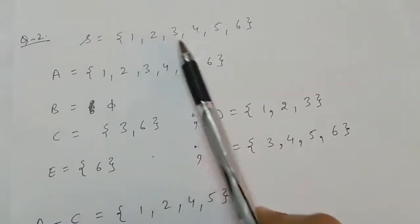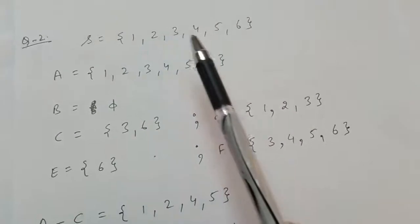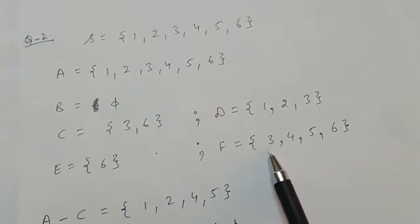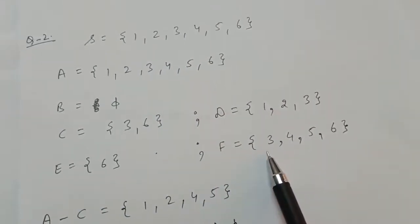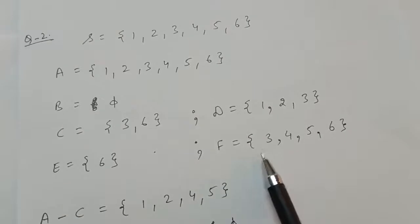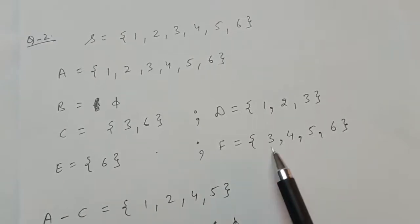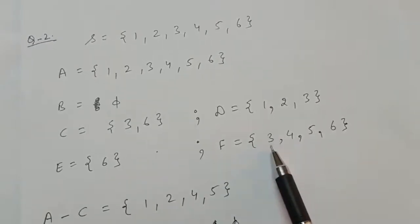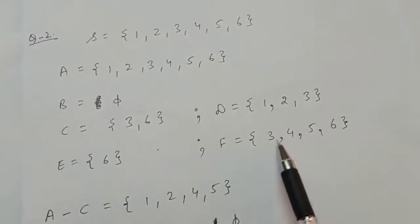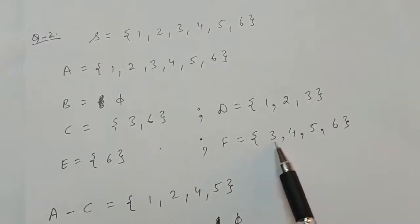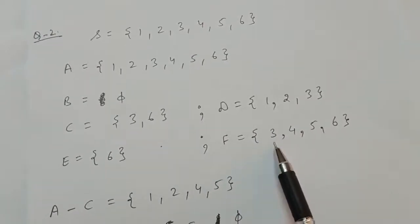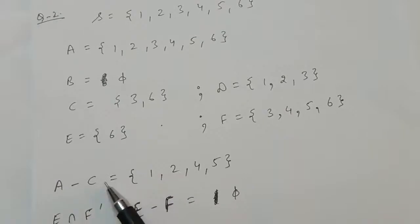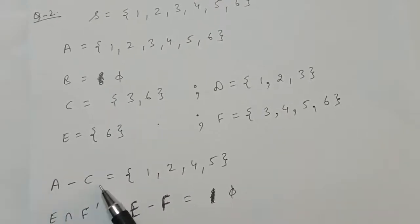Some students do not consider 3, but you have to be careful — they have said a number not less than 3, so 3 is not less than 3, 3 is equal to 3, so 3 will also come. Now A minus C gives the elements which are in A but not in C, which are 1, 2, 4, and 5.